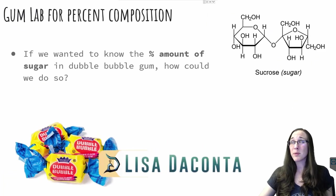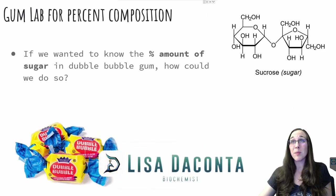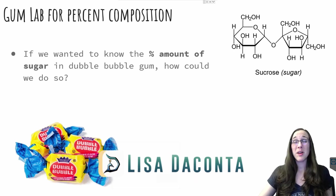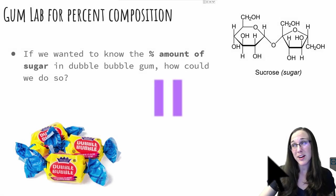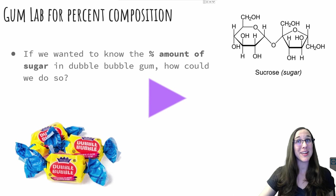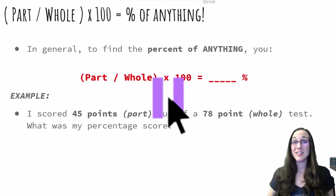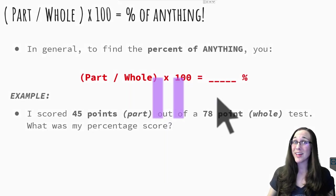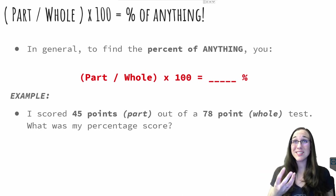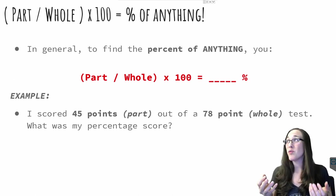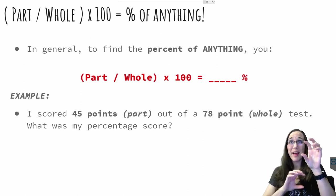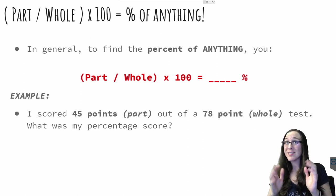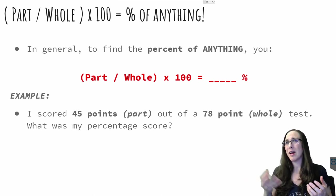So if we wanted to know the percent amount of sugar in a Double Bubble bubblegum, how could we do so? Think about how we would find a percent to begin with. Pause the video here and take a quick second to think about it. Did you think about this? A part per whole. Any part divided by a whole times 100 is equal to a percent. If you take the piece and divide it by the whole and then multiply that answer by 100, you will get the percent of whatever it is you're looking for.